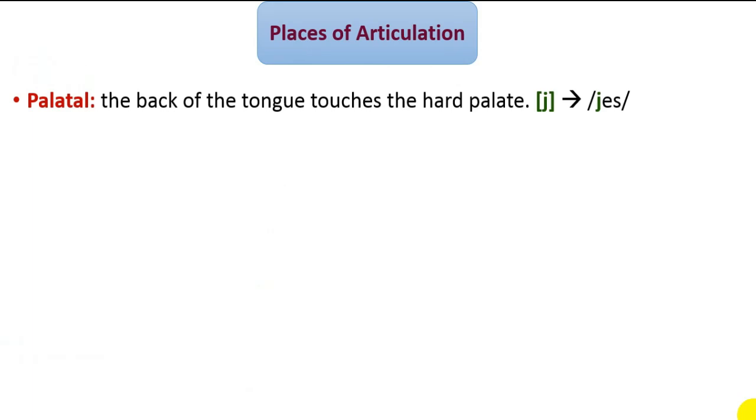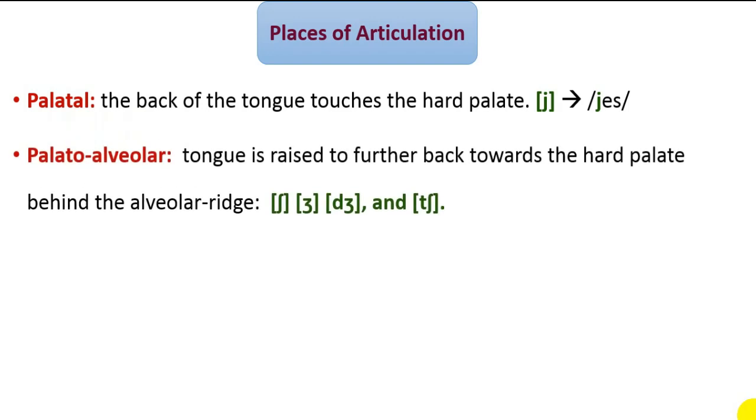Another feature is palato-alveolar. The production of such sounds is made with the tongue raised further back towards the hard palate, behind the alveolar ridge. English has four palato-alveolar sounds: SH, ZH, J, and CH.